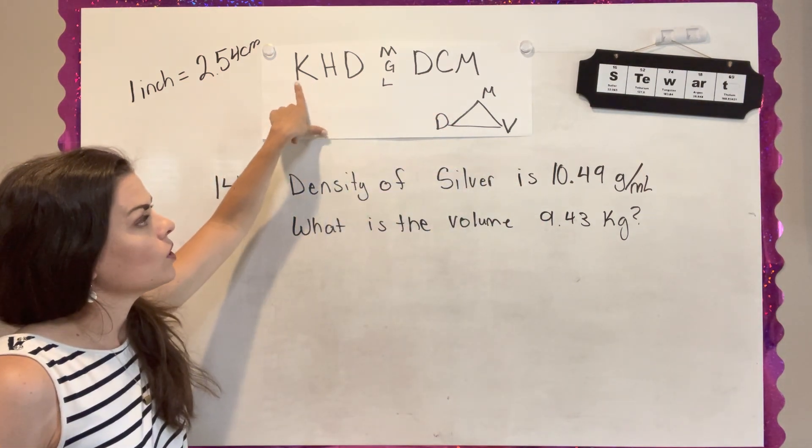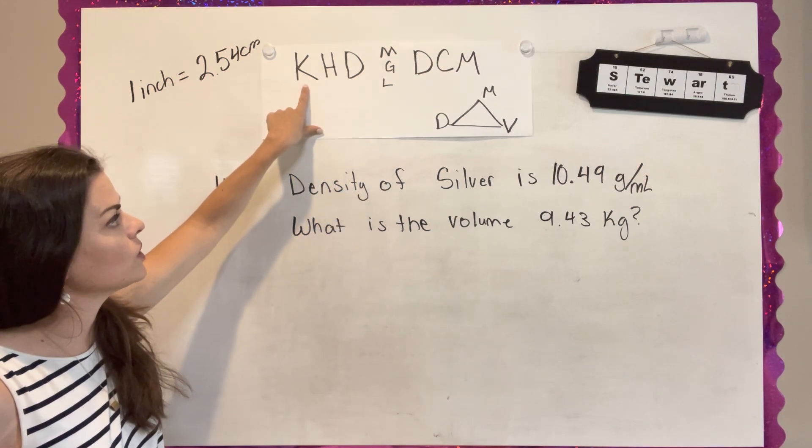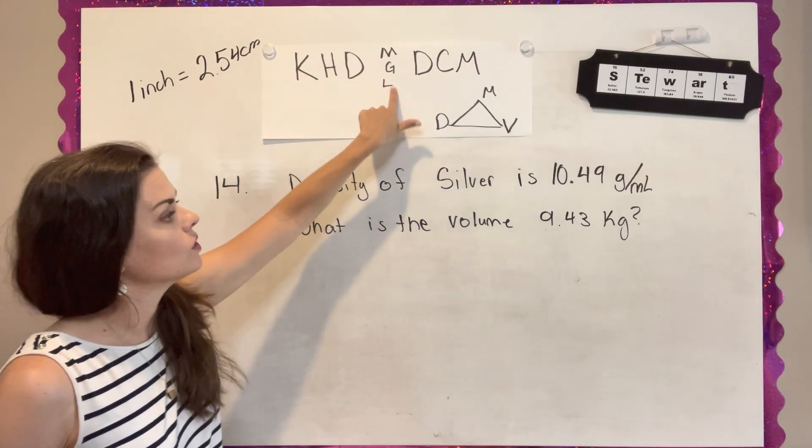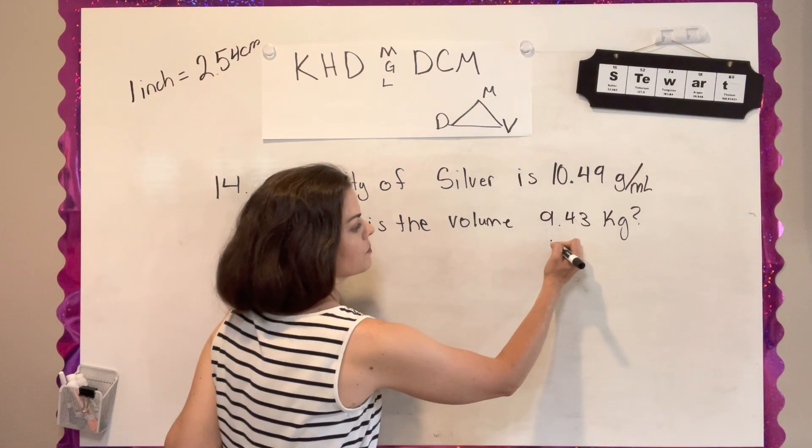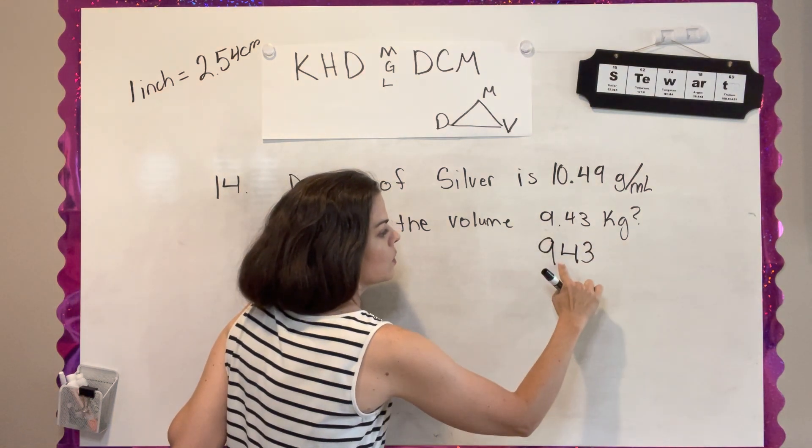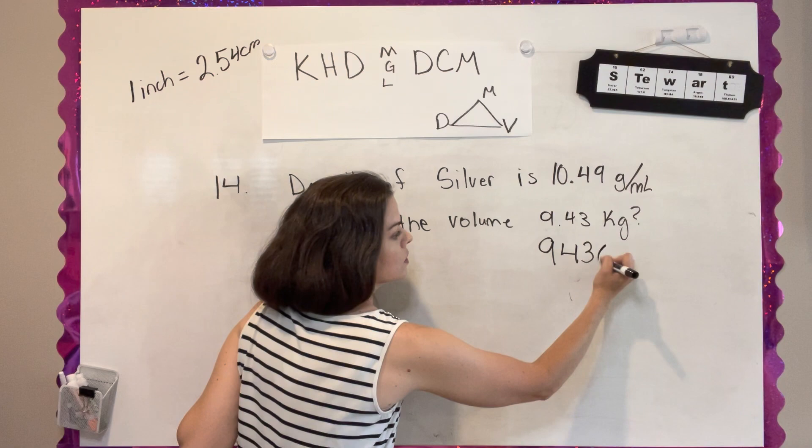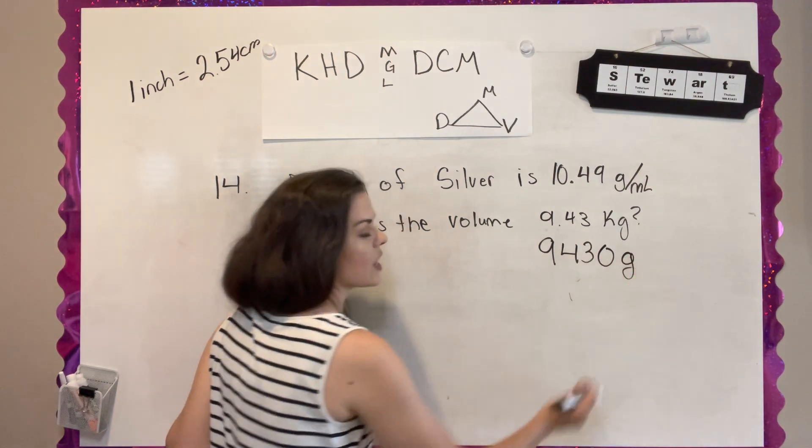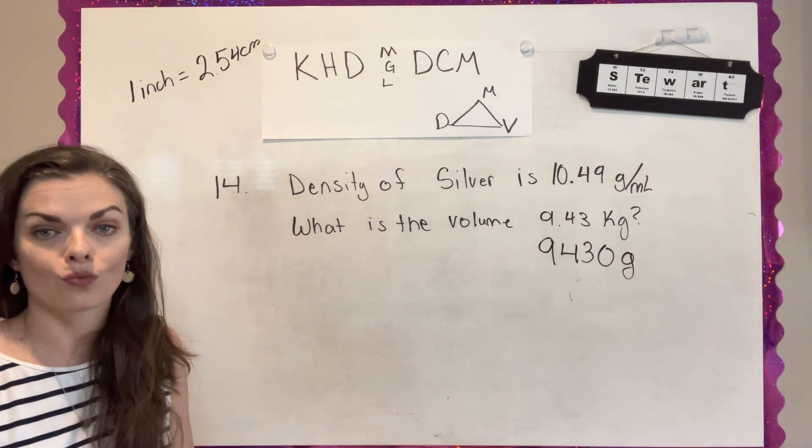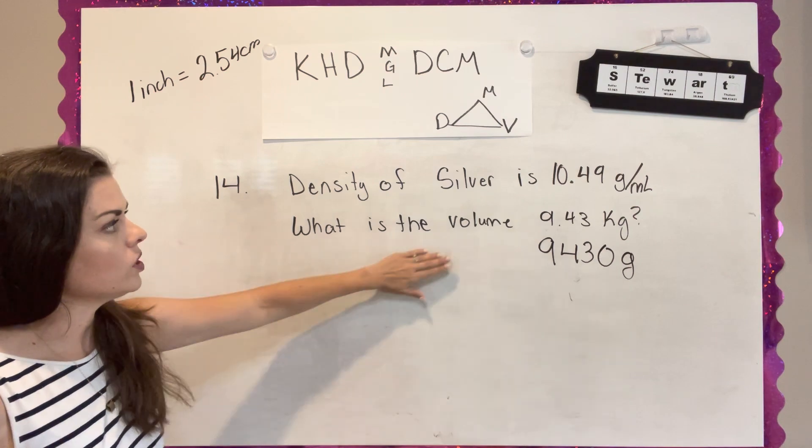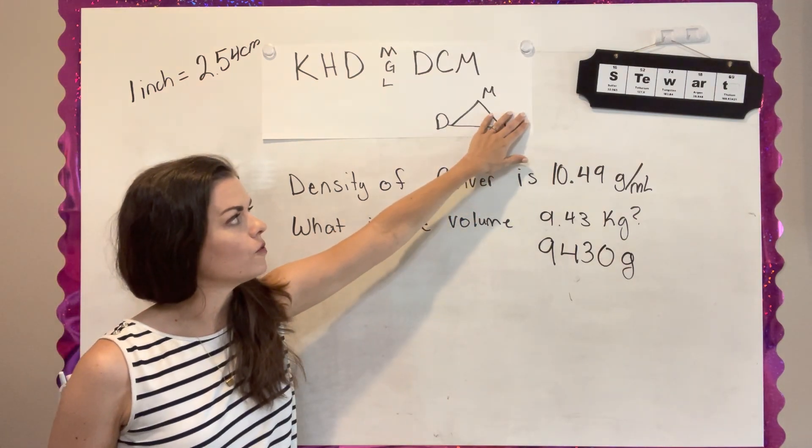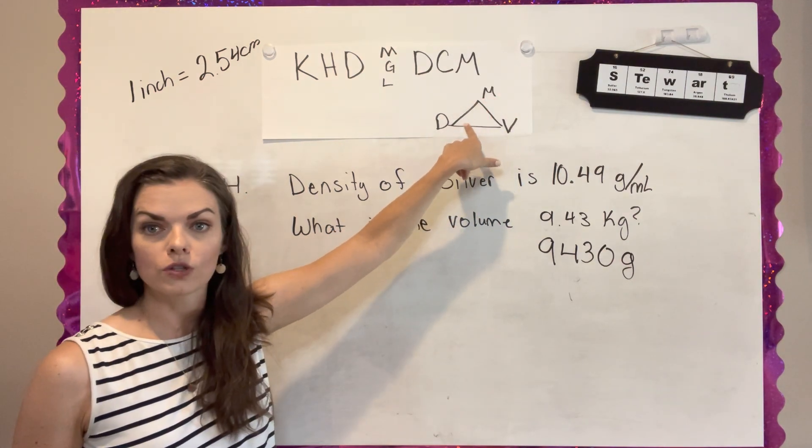So I'm going to use King Henry Died and put this first in grams. I'm going from kilo to grams. So my decimal has to go 1, 2, 3 steps to the right. So that's 9,430 grams.